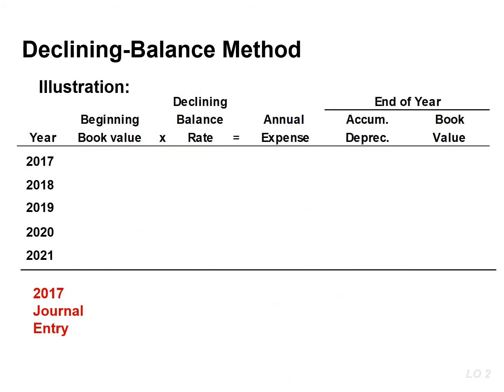Book value for the first year is the cost of the asset. But in subsequent years, book value is the difference between cost and accumulated depreciation at the beginning of the year. The depreciation rate is 40%, which is double the straight line rate of 20%, or we can simply divide the useful life into two. The depreciation expense is $5,200, and that is found by multiplying the book value of $13,000 by the rate of 40%.